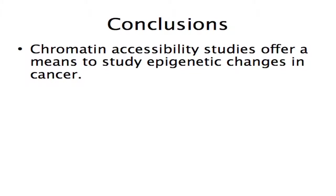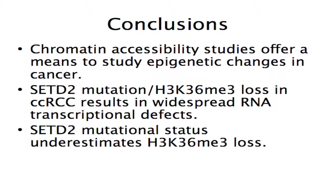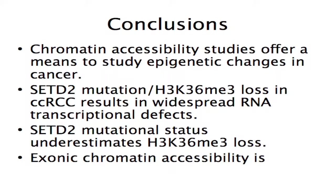In conclusion, chromatin accessibility offers an approach to study epigenetic or chromatin changes in cancer in a non-biased way. SETD2 mutation and more globally H3K36 trimethylation loss leads to large changes in transcription globally. SETD2 mutational status actually underestimates H3K36 trimethylation loss, which is important because the TCGA doesn't have FAIRE data. And exonic chromatin accessibility is altered in the absence of H3K36 trimethylation. We also think that chromatin epigenetics may be a new biological target for therapeutic intervention. We acknowledge the people who did the work, primarily Jeremy Simon in my lab, as well as Kate Hacker in Kim Rathmell's lab.